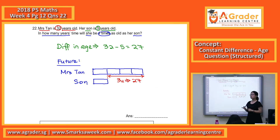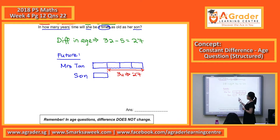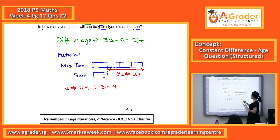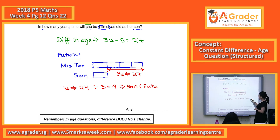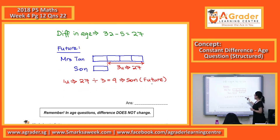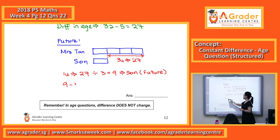So our 3 units here will be 27. You can check by dividing to see if you get a whole number. 27 divided by 3 is 9. So 9 is the son's age in the future. But the son is only 5 years old now, so from 5 to get to 9 — that is 9 minus 5, which is 4. The final answer is 4 years.